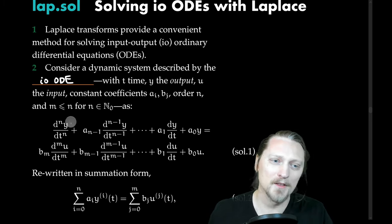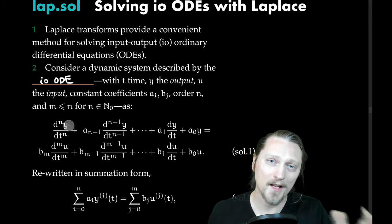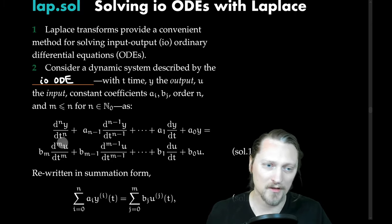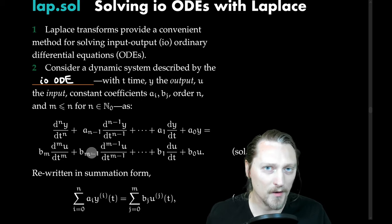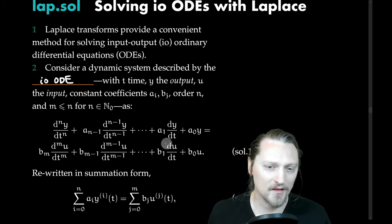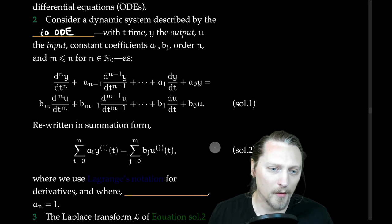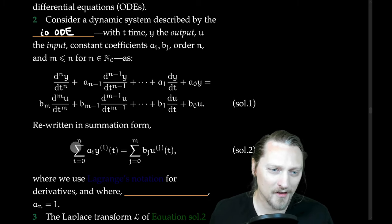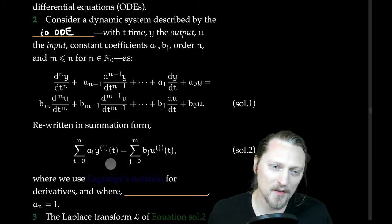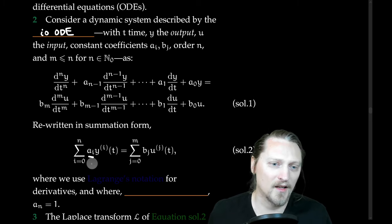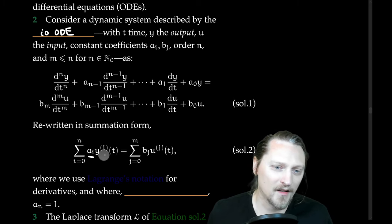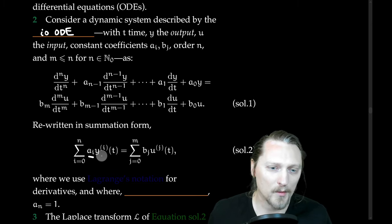Time derivatives of the output are on the left-hand side of the equation. Time derivatives of the input are on the right-hand side. Rewritten in summation form — we're summing coefficients A_i times the derivatives of Y.